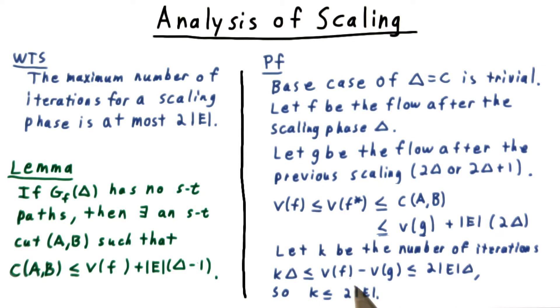But from this bound here, we have that this is at most twice the number of edges times delta. And so from this then, we conclude that the number of iterations is at most twice the number of edges.